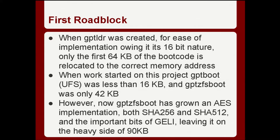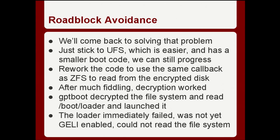At this point, GPT-ZFS-boot had an AES implementation, MD5, SHA-256, SHA-512, and a bunch of GELI bits copy-pasted in, so it was over 90 kilobytes. If you only use the first 64 kilobytes of a 90-kilobyte binary, it doesn't work — the instruction pointer gets into uninitialized memory and triple-faults. I tried compile with optimize-for-size, which made it about one kilobyte bigger. I tried increasing the number of blocks copied, but the assembler just changed it back. So I stuck to making it work for UFS first, since 14KB plus encryption is still under 64K, and reworked the callback so UFS could also decrypt on the way — and it worked.